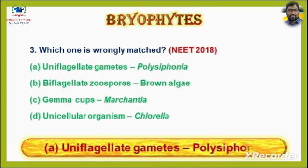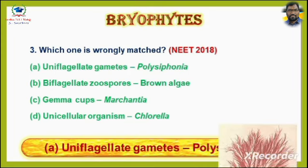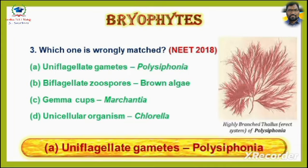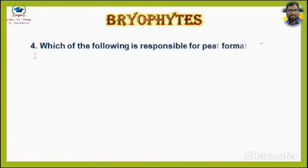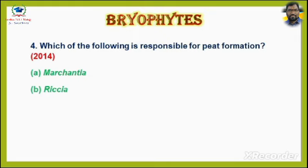Answer is Option A: Uniflagellate gametes — Polysiphonia. Question No. 4. Which of the following is responsible for peat formation? Asked in NEET 2014. Options are: A. Marchantia. B. Riccia. C. Funaria. D. Sphagnum.